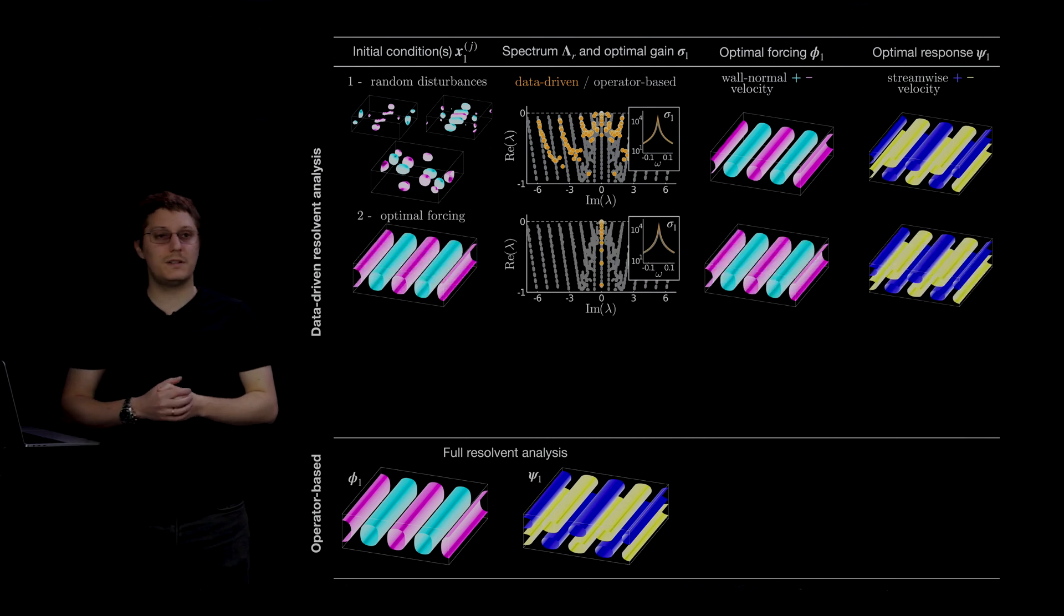Now, what happens if we use the optimal forcing as an initial condition to generate our dataset? Well, in that case, we only need 20 DMD modes to generate an even better approximation of the true resolvent modes.